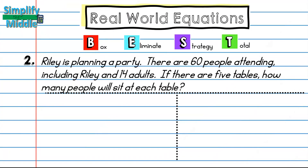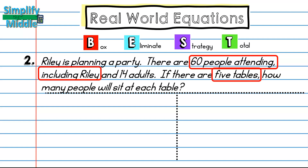In this problem, Riley is planning a party. There are 60 people attending including Riley, and 14 adults. If there are five tables, how many people will sit at each table? The important information to box is 60 people total and five tables, and the word 'each' tells us this is a multiplication or division problem. We can eliminate the 14 adults, since they're already included in the 60 people.